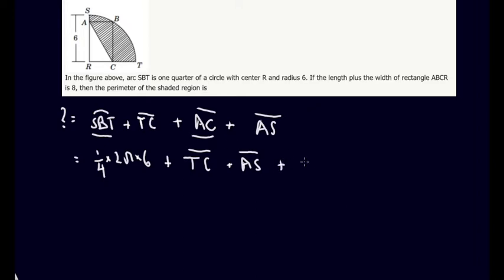AC, however, is more easy for us to find. So AC is a diagonal of our rectangle, right? But we can also note that, let me change the color here, since AC is a diagonal of our rectangle, we know that AC is equal to RB. We know that AC equals RB as they're both diagonals of our rectangle.